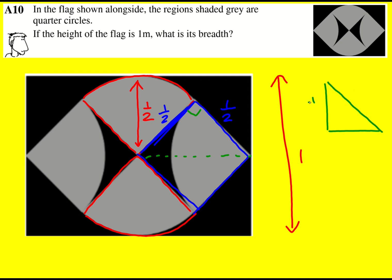So I have a right-angled triangle with a half and a half. And then this diagonal length, which I might call x, that is actually a half of the breadth. So if I can work out that and then double it, I'm sorted.